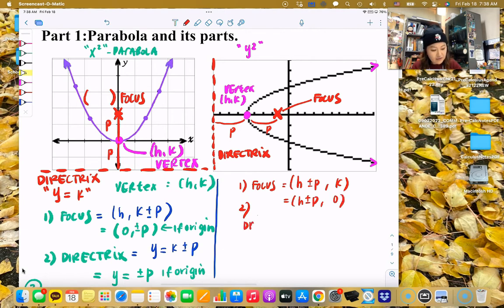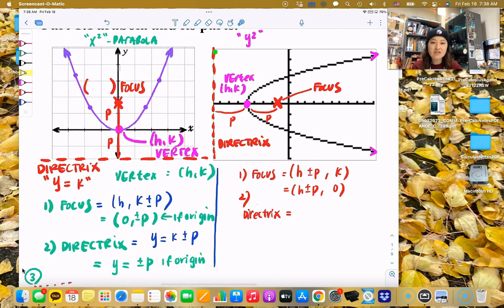How about the directrix? Directrix. Directrix is easy peasy as well. You just change it, you go back. And look at the line. How do you draw, what's this equation of this line here? It's an x equals. So you know it's going to be x equals h plus or negative p or x equals plus or negative p if origin again.